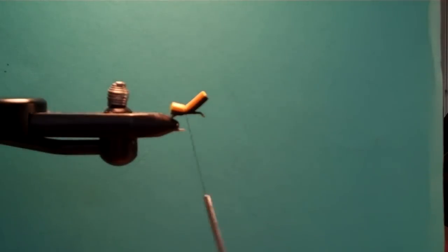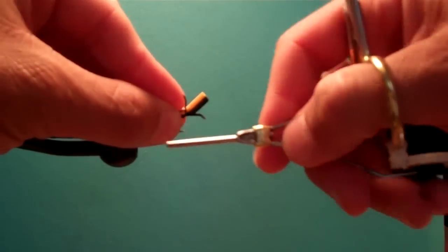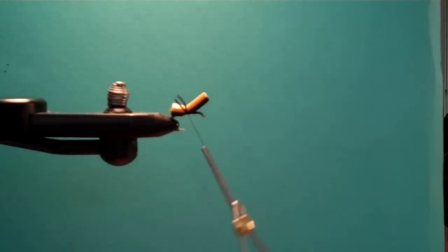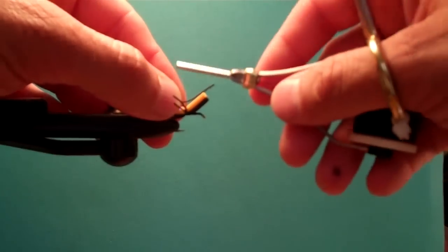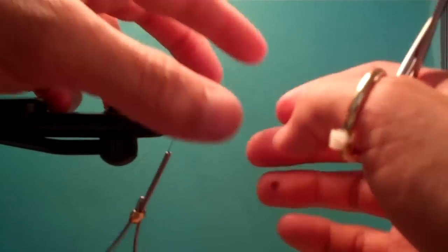Take a small round black rubber leg and just tie it in. One, two, three. Do the same on the opposite side. One, two, three. Position them where you want them to be.